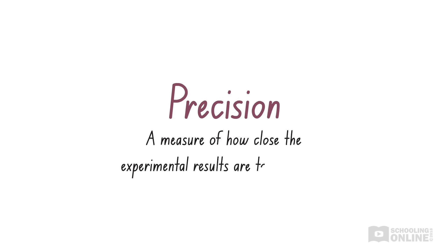Another key term is precision, which is a measure of how close the experimental results are to each other. If the results of an experiment are precise, then the experimental method is reliable.